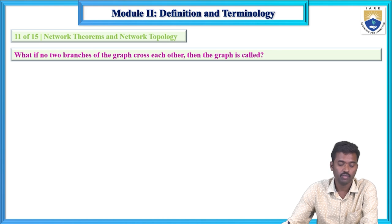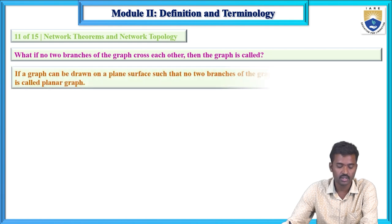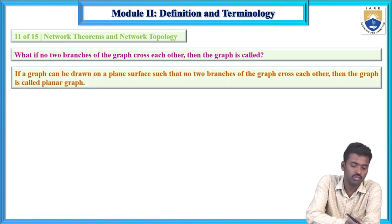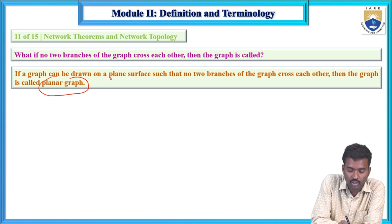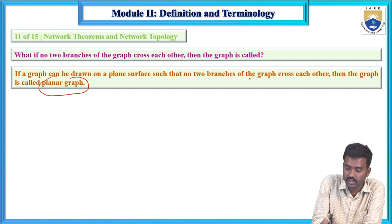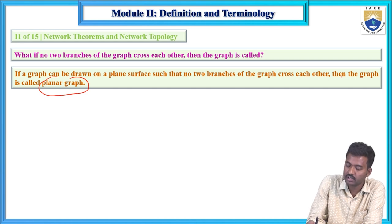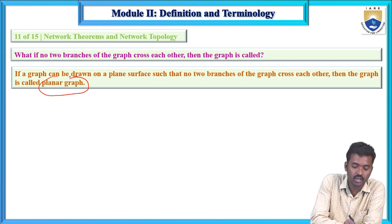Eleventh question: what if two branches of a graph do not cross each other? If a graph can be drawn on a plane surface such that no two branches cross each other, then the graph is known as a planar graph.